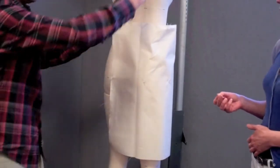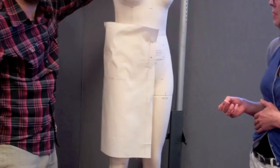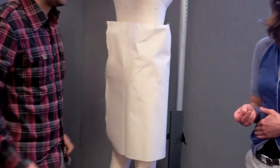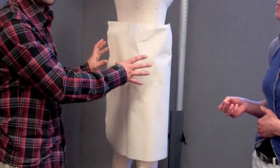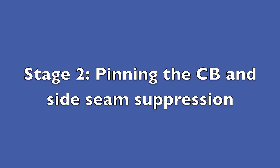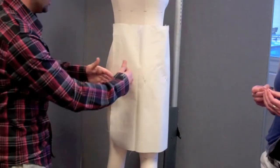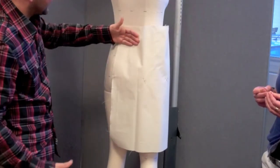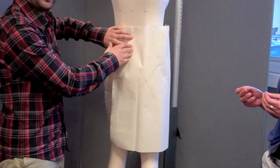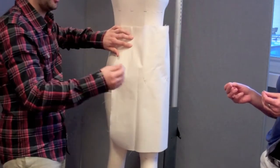Once you have the fabric pinned successfully to the form around the hip line, you can begin to model the shape to allow you to form the suppression into this piece. The next step is to smooth it to follow the centre back and pin this in as well to hold it. By holding it at the centre back and centre front, you will be able to place the suppression at the back, the front, and the side.